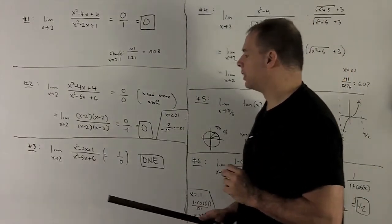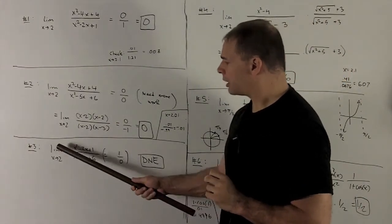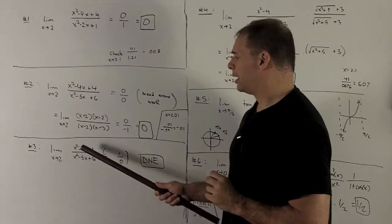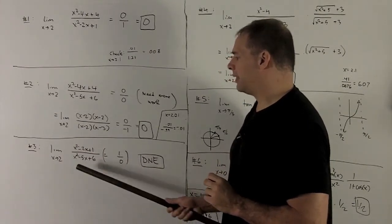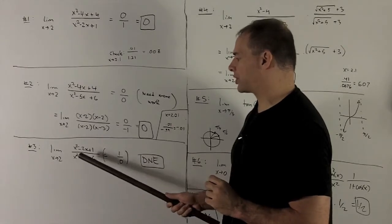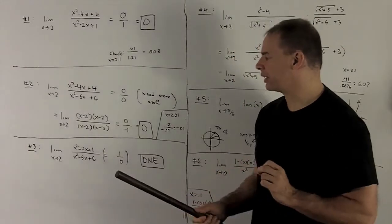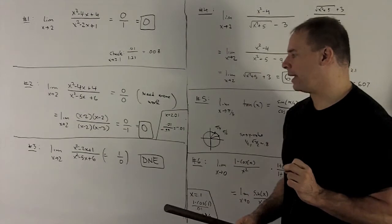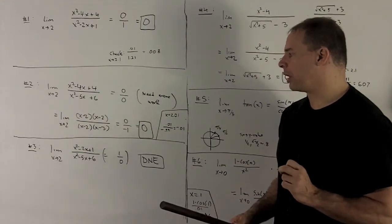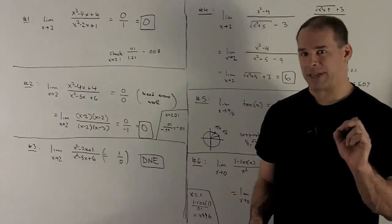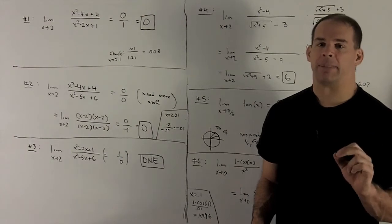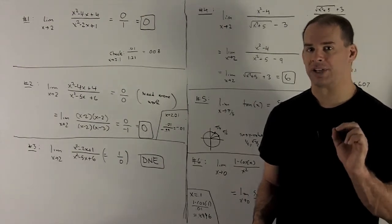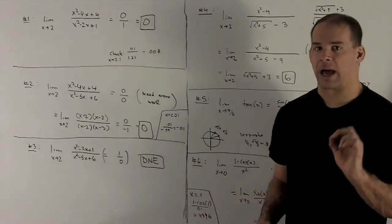Okay, try another limit x going to 2. I'll have x squared minus 2x plus 1 in the top, and then same denominator as before x squared minus 5x plus 6. We put our 2 in there, and then I wind up getting a 1 over 0. So that does not exist. We can't divide by 0, so we're kind of stuck stopping right there.